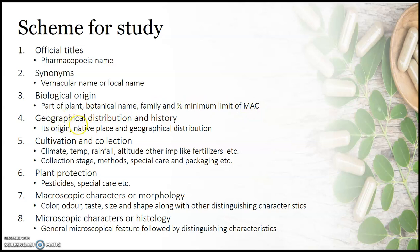The fourth point is geographical distribution and history. The history contains its utilization as a therapy for therapeutic purposes for the first time, along with how this plant has been recognized for therapeutic purposes. In the geographical distribution, the study focuses on its native or indigenous places along with its commercial cultivation places in different parts of the world.